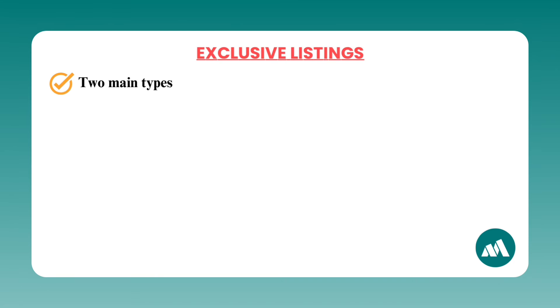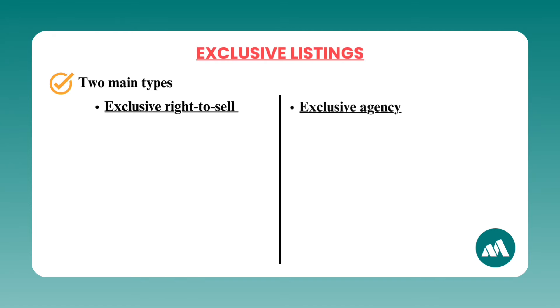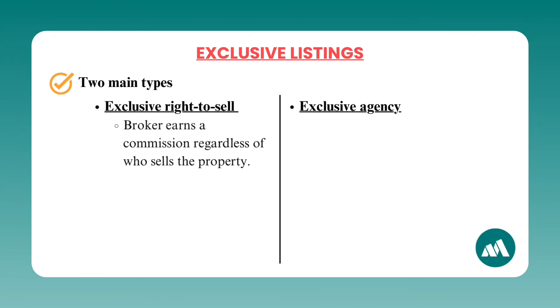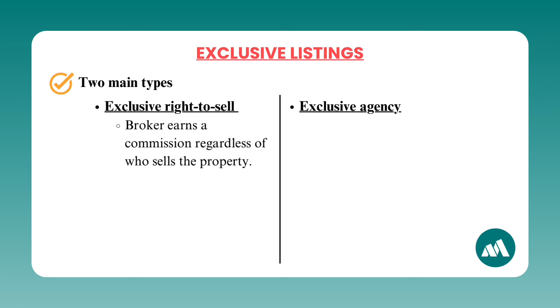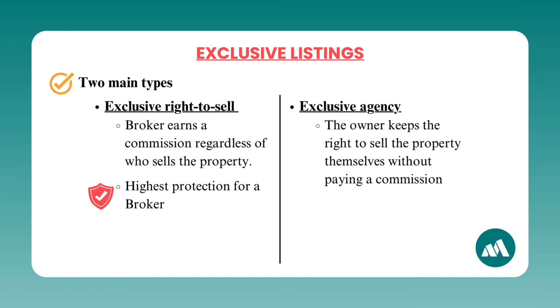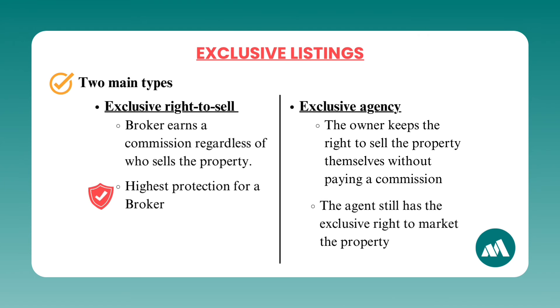Number twelve: exclusive listings. There are two main types you must know. In an exclusive right to sell listing, the broker earns a commission regardless of who sells the property — even if the owner finds a buyer independently. This gives the broker the highest protection. In an exclusive agency listing, the owner keeps the right to sell the property themselves without paying a commission to the broker, but the agent still has the exclusive right to market the property.